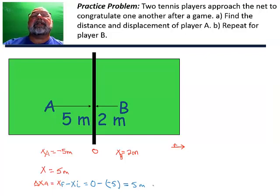Well, player B has an initial position of two meters. Two meters. And for player A to travel to the net to shake hands, the distance traveled is going to be equal to two meters.